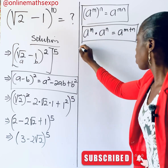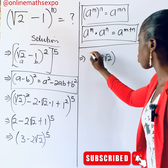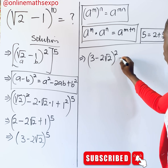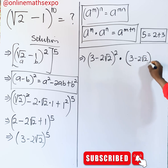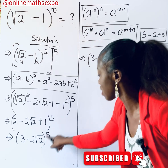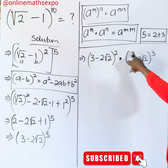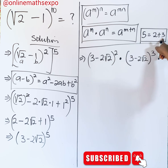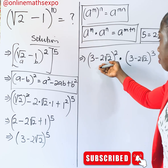So we rewrite: (3 − 2√2)^5 becomes (3 − 2√2)² multiplied by (3 − 2√2)³. The bases are the same, and when you add the powers 2 and 3 you get 5, so we have not changed anything. Now let's simplify each factor separately, starting with the squared term.